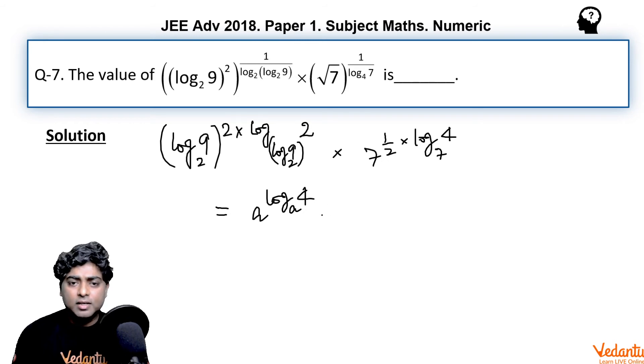For the second term, 7 raised to the power log₇(4^(1/2)), which is 7^((1/2)log₇4). Now there is a property that says a^(log_a b) is nothing but b.